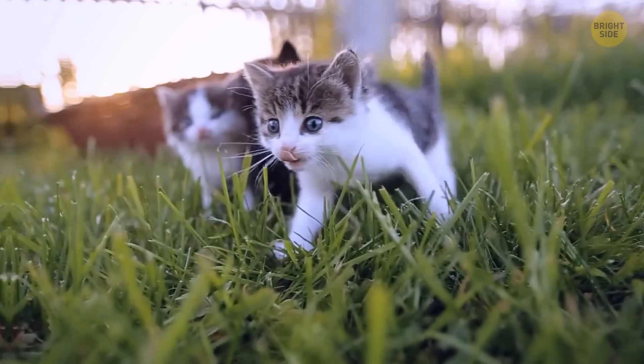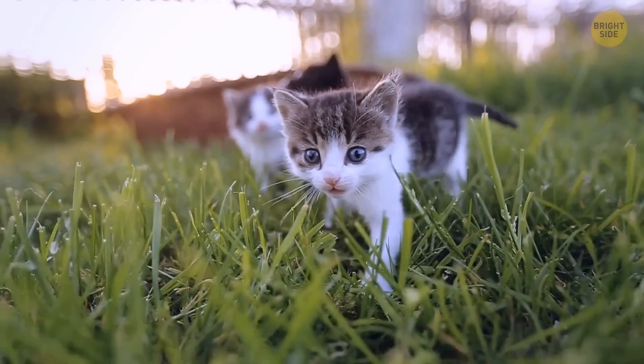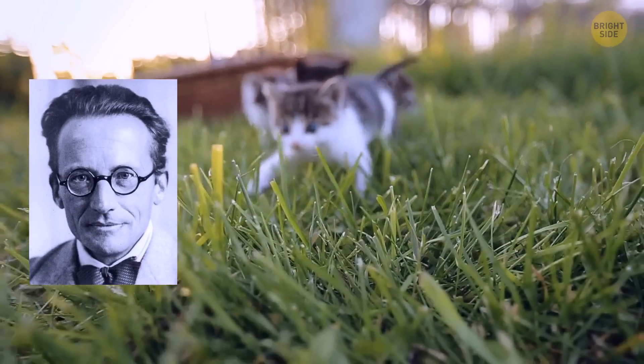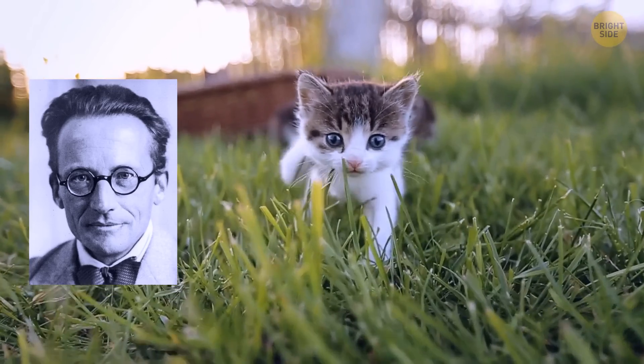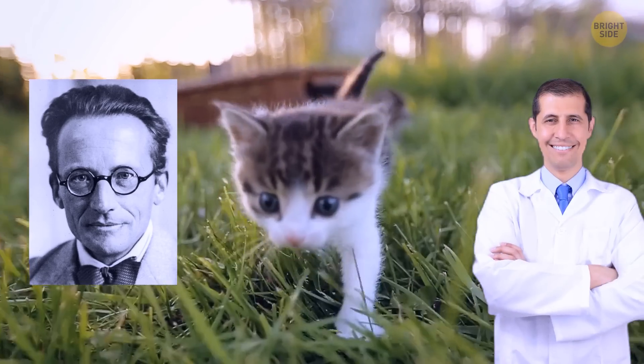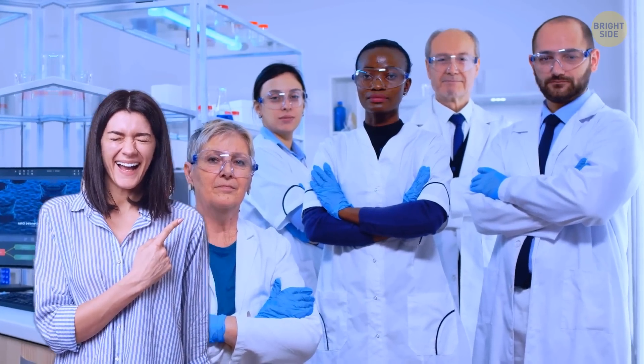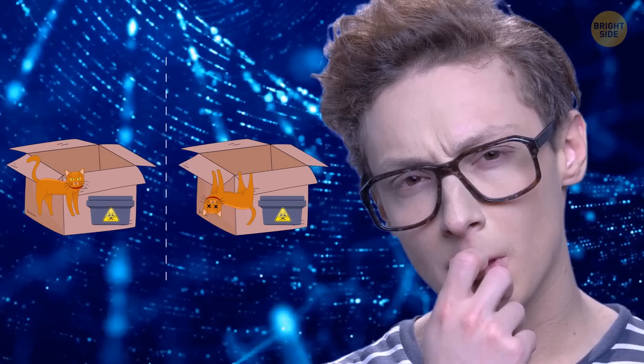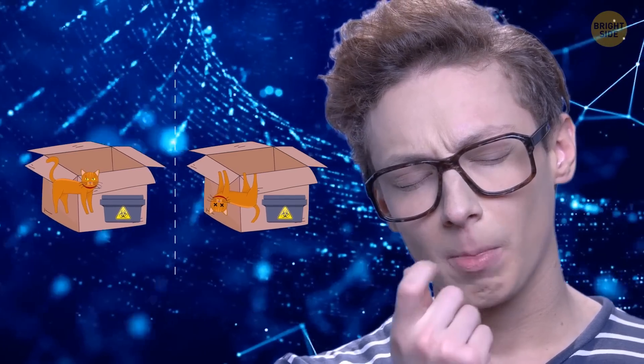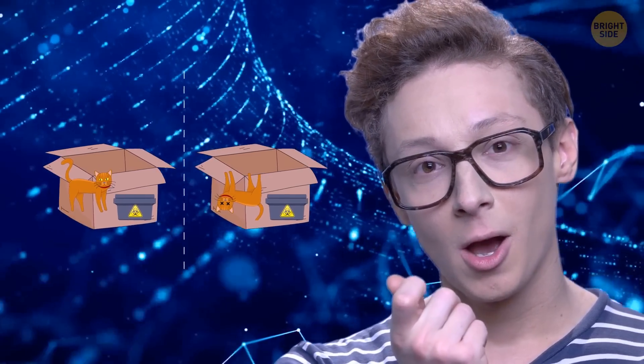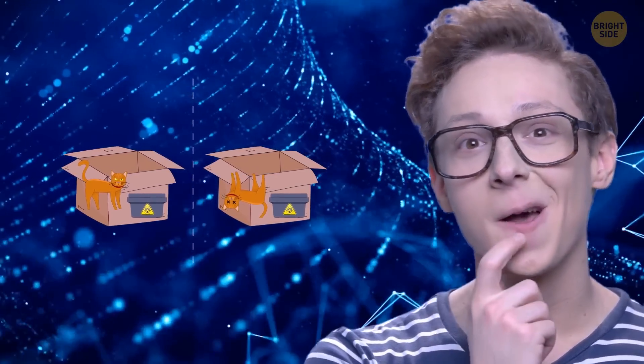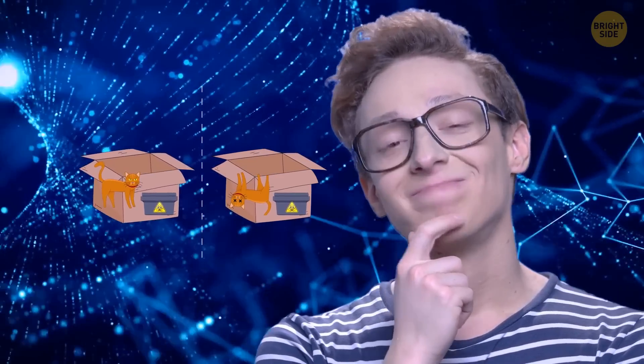So why do we do all this to a poor kitty? Well, initially, Erwin Schrödinger wanted to show how stupid it all sounded. But then, he accidentally proved that quantum physicists were right. The situation turned out to be pretty funny. It went like this. Ha ha ha, these quantum physicists have no idea what they're talking about. According to their logic, the cat in my box should be both alive and not alive at the same time. Wait, hold on. Uh oh, they're right.